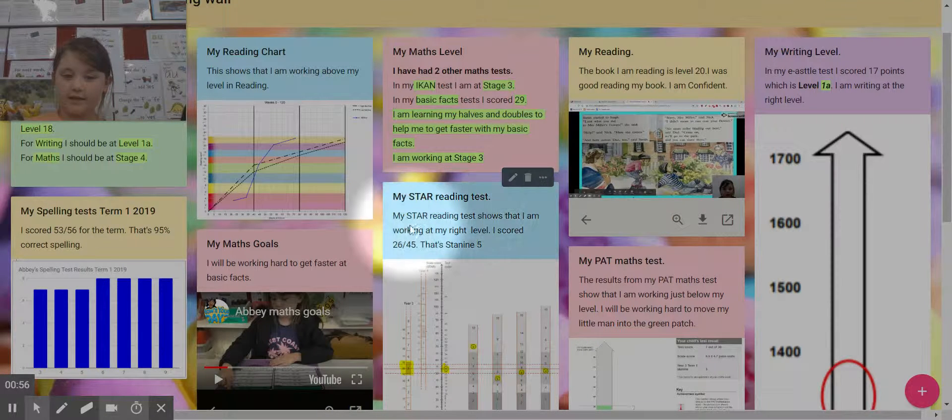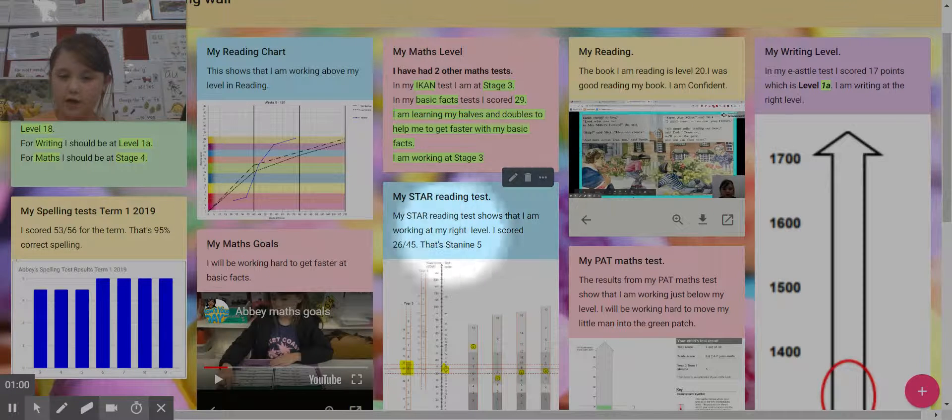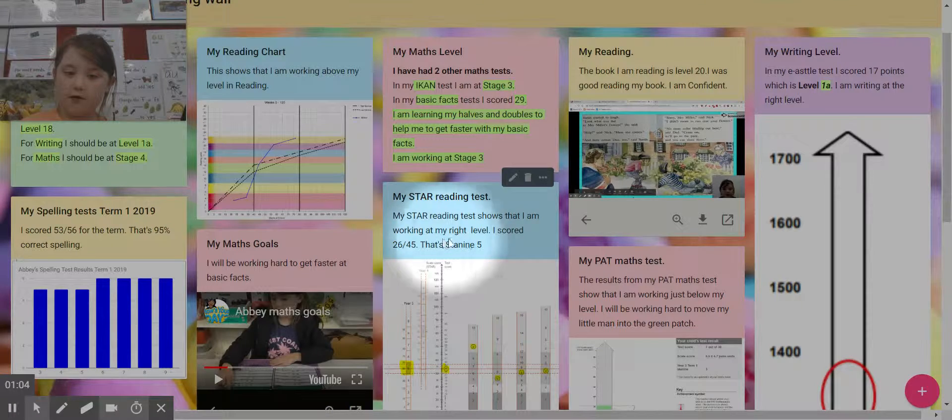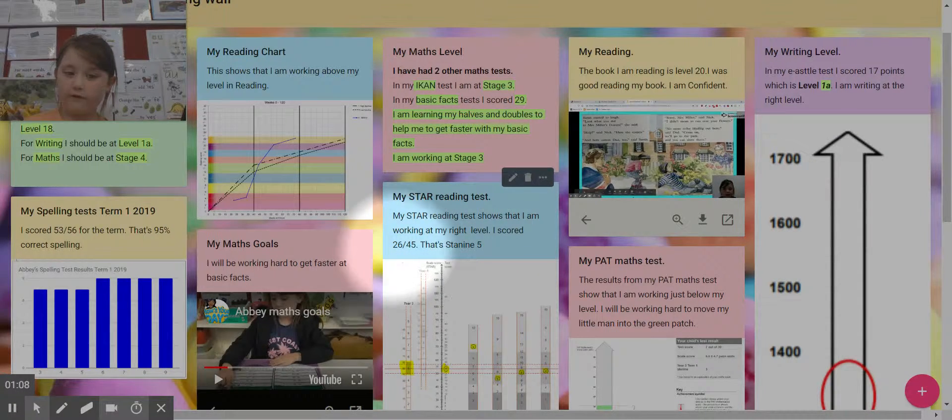My star reading test shows that I am working at my right level. I scored 26 out of 45. That's a stage 9-5.